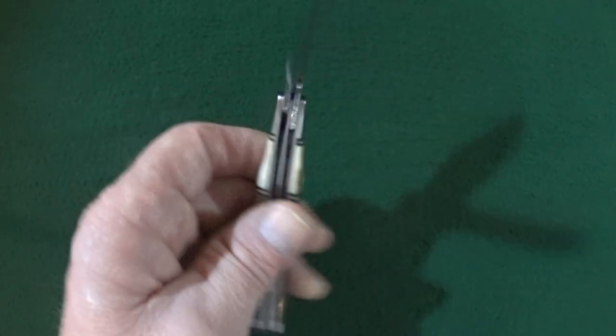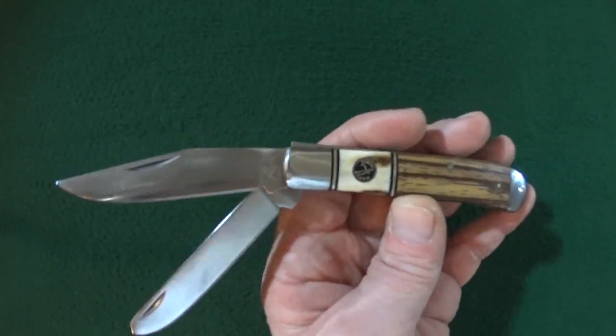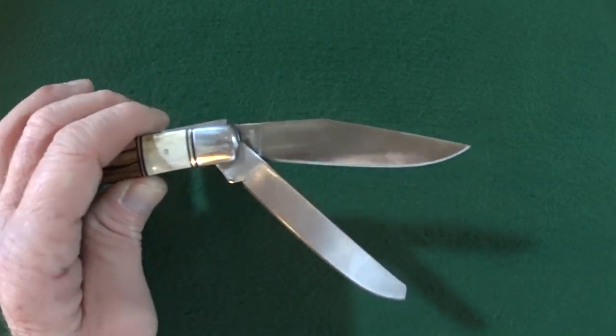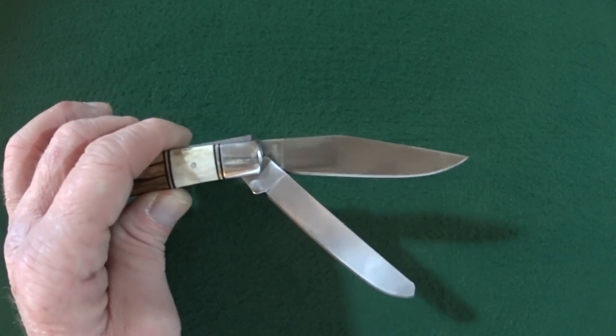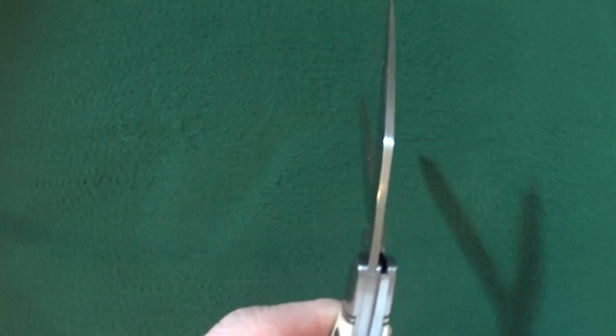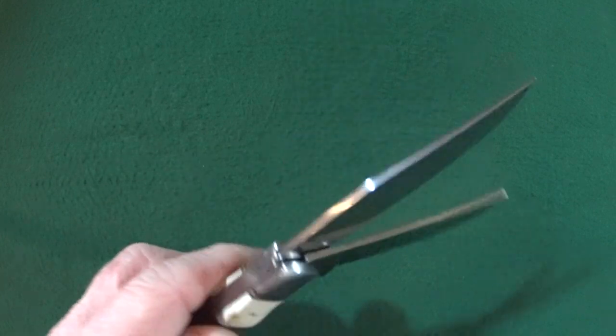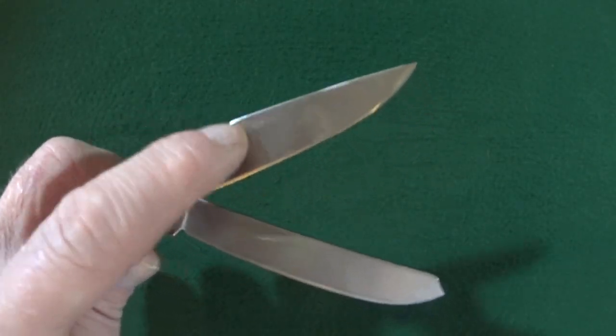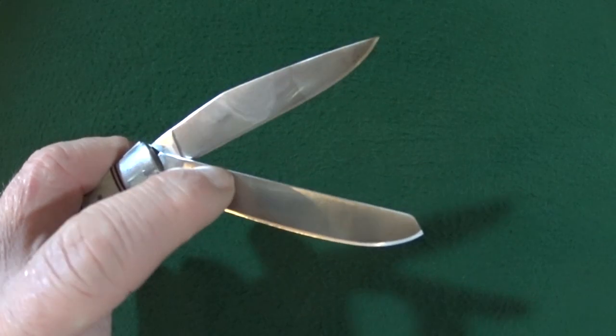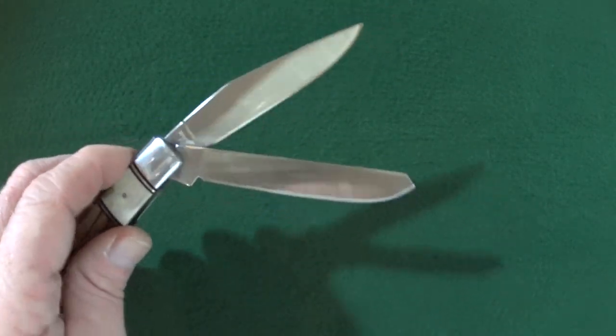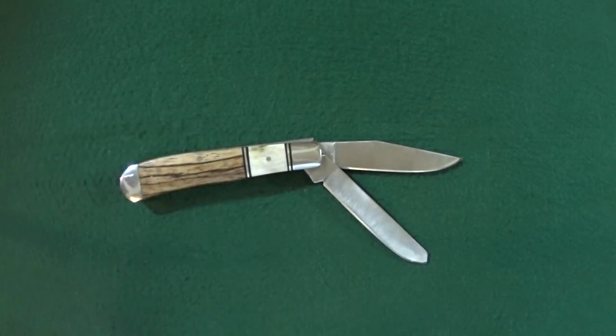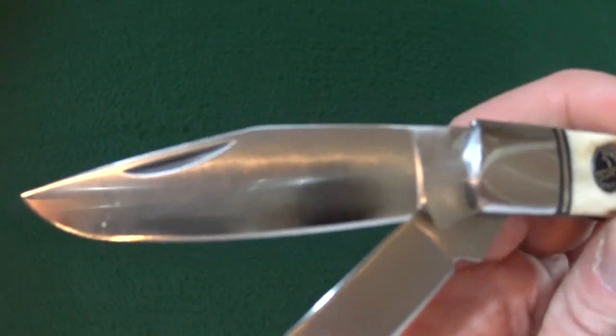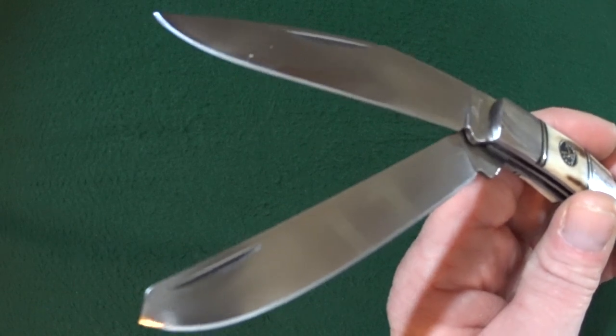Starting with the blades of the Laredo Trapper, you're looking at two 1065 carbon steel blades with a really nice satin finish. Both are 3.25 inches in length and 2.25 millimeters thick. The profile width of each blade is different. The primary one is 0.63, and the secondary is right at a half inch, 0.50. The Laredo features nail-nick deployment.